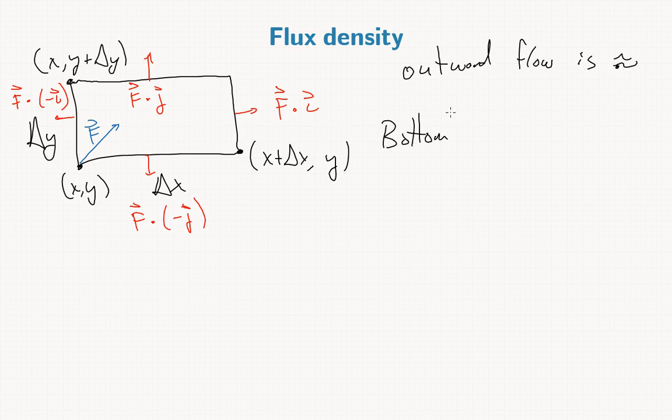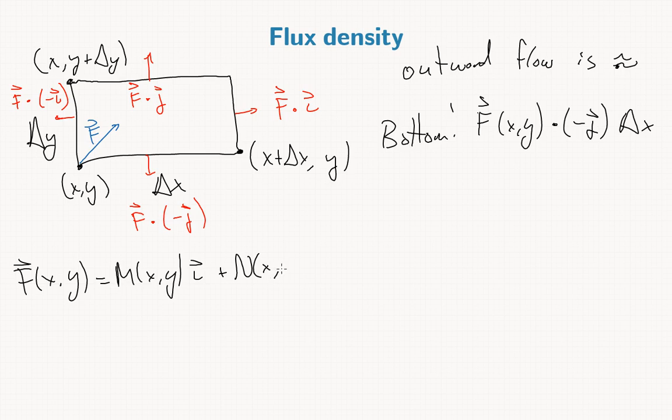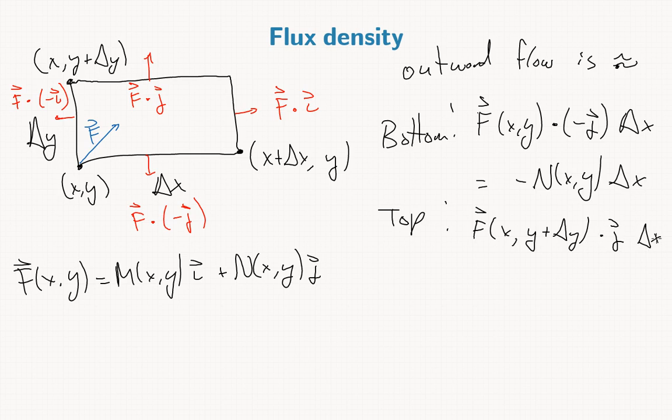So the approximate outward flow along each edge is approximately, so on the bottom we have f of (x,y) dot negative j, and then again we want to multiply this by the length of that segment, so times delta x. And so let me write f(x,y) is M(x,y)i plus N(x,y)j. So this will give us negative N(x,y) delta x. On the top we get f of (x, y plus delta y), then we dot that with j and then times delta x, and then this will give us N of (x, y plus delta y) delta x.